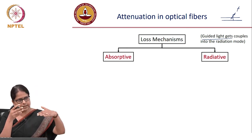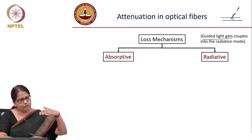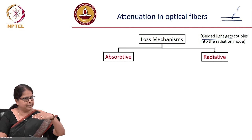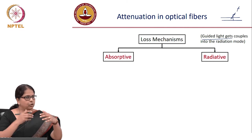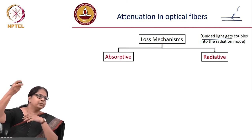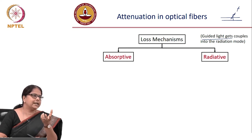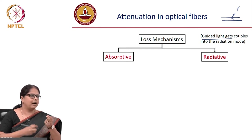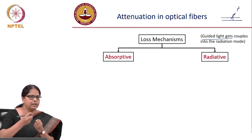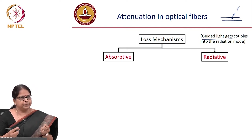If the incident light frequency is close to the resonant frequency of a bond, the absorption will be large. This is characteristic of the bond between Si and O in the SiO2 molecule.